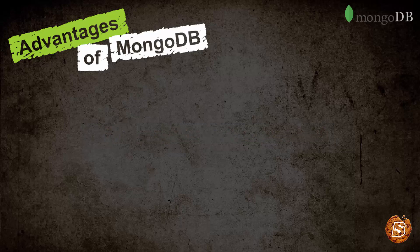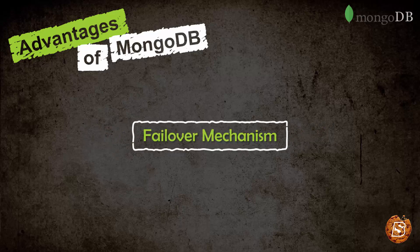MongoDB has a failover mechanism by making use of replica sets, and this is automatically handled. If the primary server goes down, the secondary server becomes the primary automatically without any human intervention.